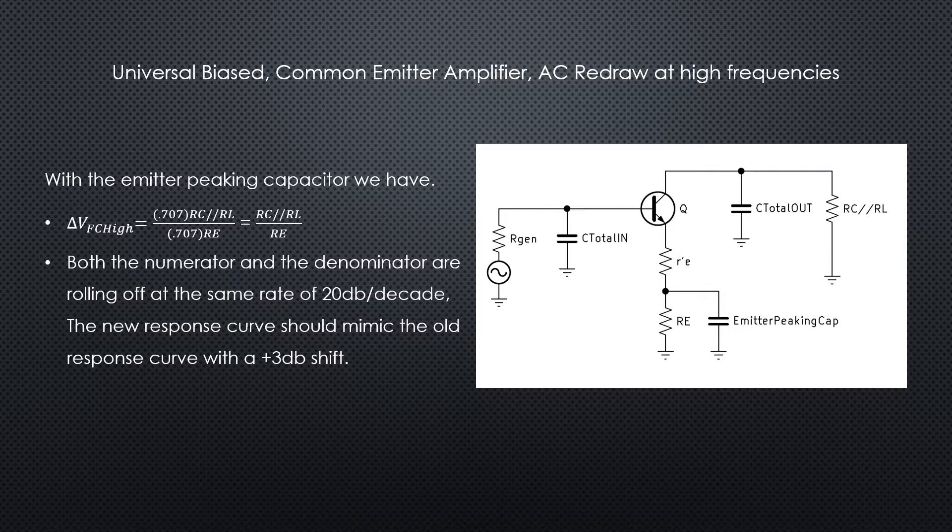So we'd have 0.707 times the parallel resistance in the numerator and 0.707 times the re in the denominator. That gets us right back—the 0.707s cancel and we end up back with rc in parallel with rl over re.